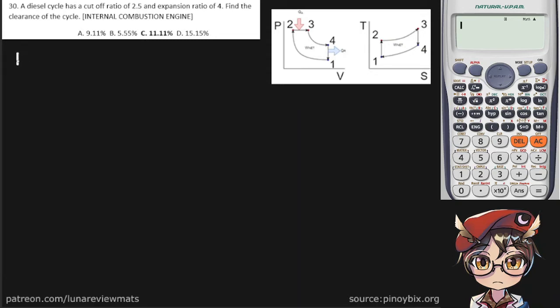So we have a cutoff ratio of 2.5, an expansion ratio of 4, and we're asked to find the clearance percent.